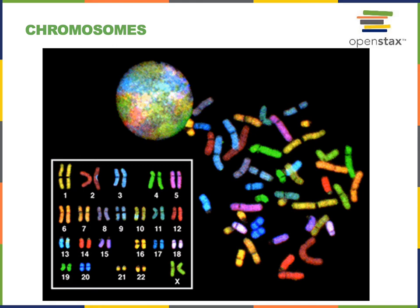Chromosomes are made of condensed chromatin. Chromatin is normally uncondensed and loosely spread out inside the nucleus. Only during mitosis and meiosis — only during the division of the nucleus — will the chromatin condense to form the visible linear chromosomes as shown here in this photo.